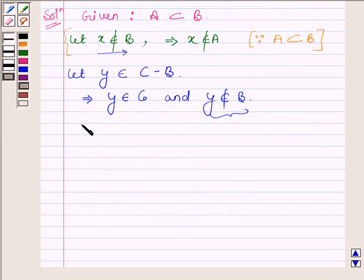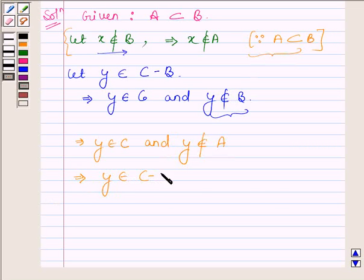Now, y does not belong to set B implies y does not belong to set A also. This is from this point. This implies that y belongs to C and y does not belong to set A. This implies that y belongs to set C minus set A.